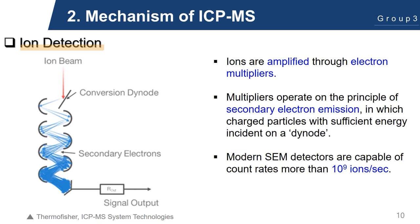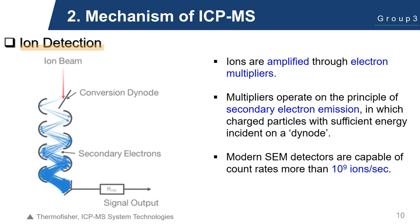We wouldn't be touting the ICP-MS with such high regard if not for its strengths in material analysis. For one, it is a fast technique that measures up to 30 elements per minute. It has a very low detection limit. It has a simple mass spectrum that allows qualitative analysis for each isotope, and it also allows measurement of the isotopic ratio of elements.